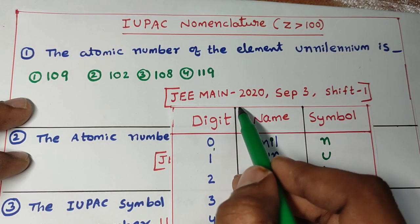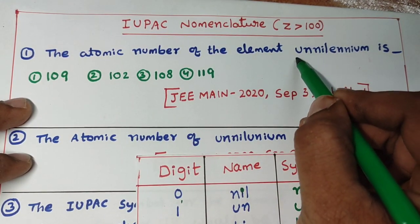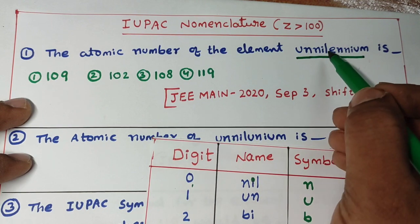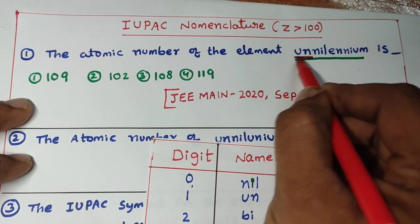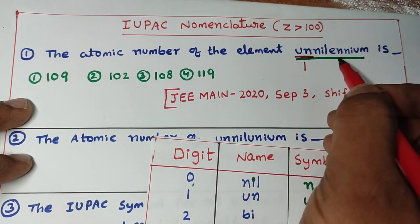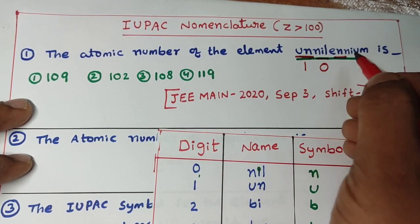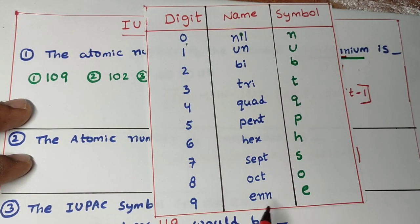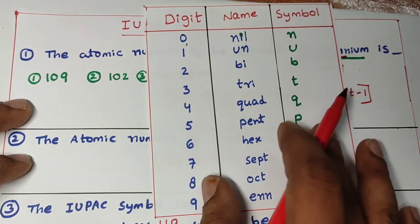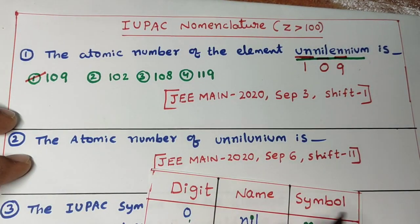Let us start JEE Main 2020 question. Look at this. This is the question: unnilennium. Un is nothing but 1. Next, nil is nothing but 0. Enn is 9. Look at this table we have to remember. 9 for enn. So what is the answer? 109 is the answer.